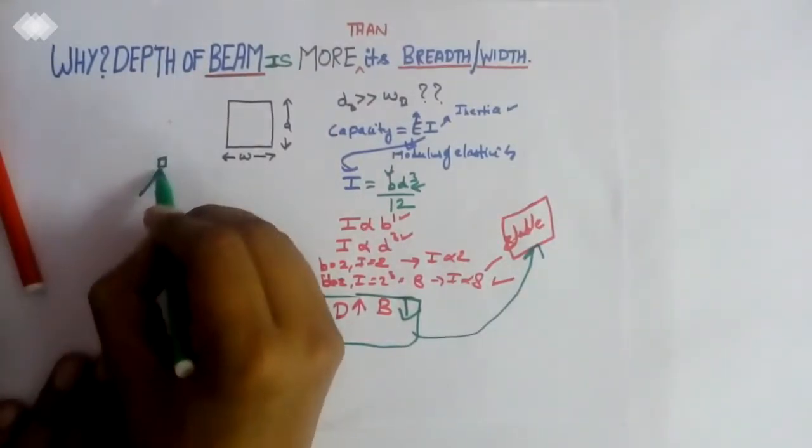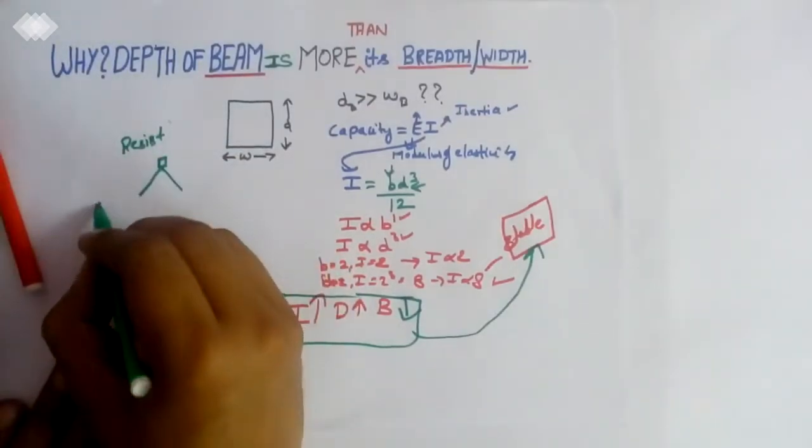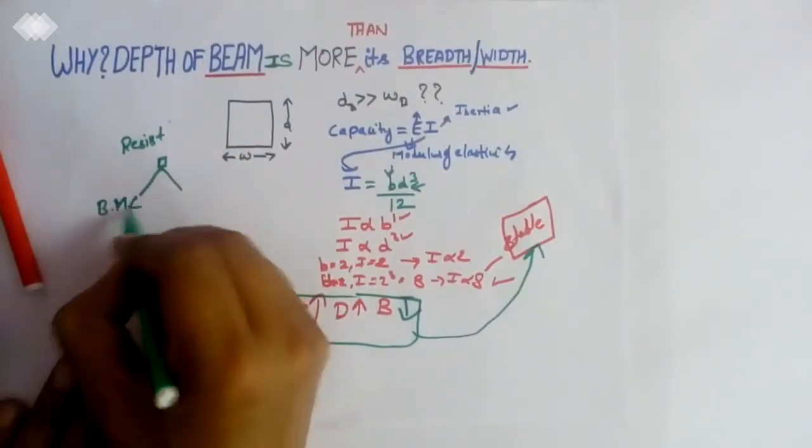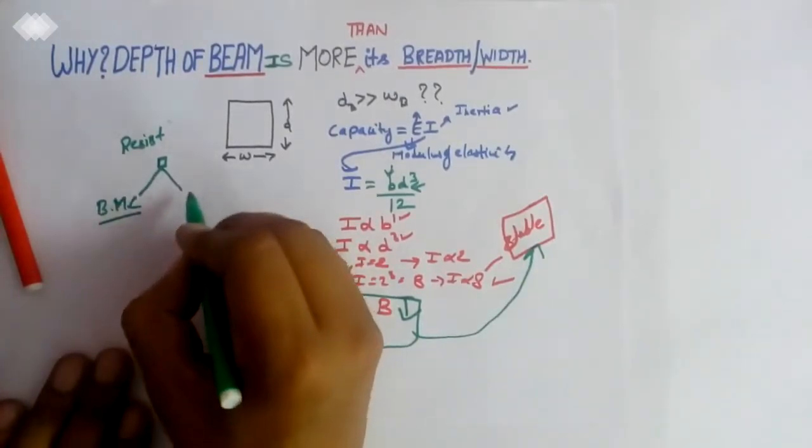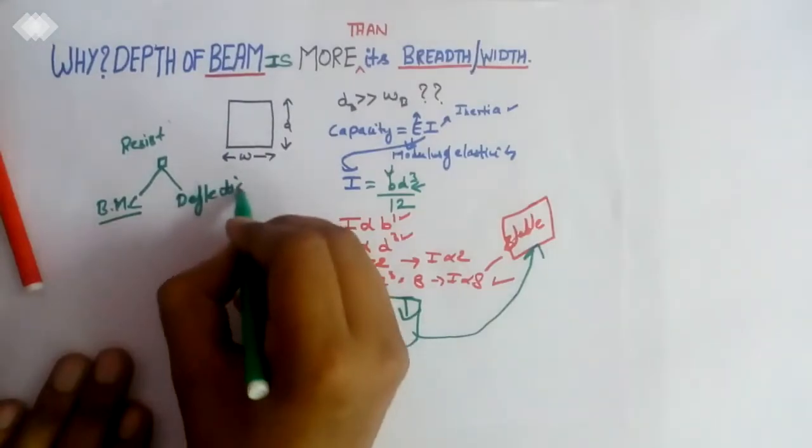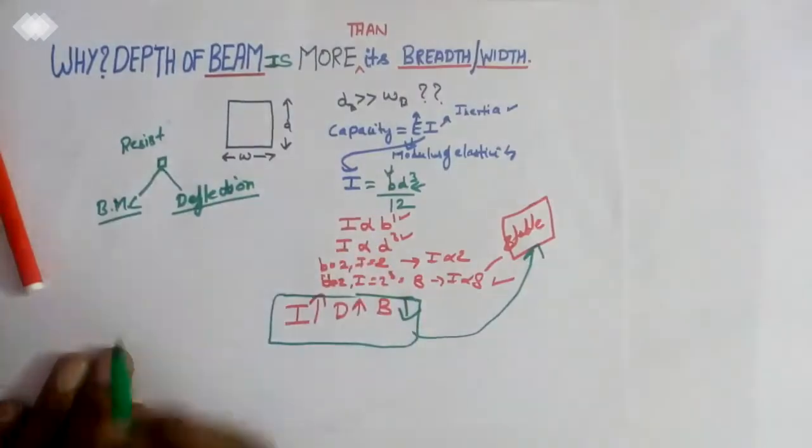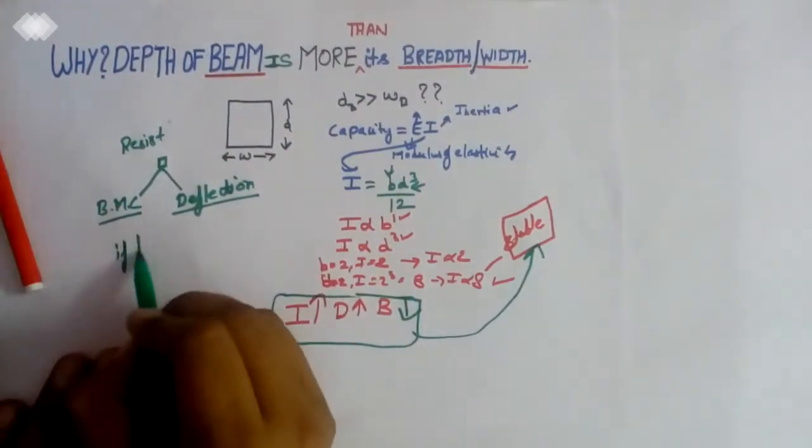We have two parameters to resist. What are the two parameters? Bending moment capacity and deflection. These are the two parameters.